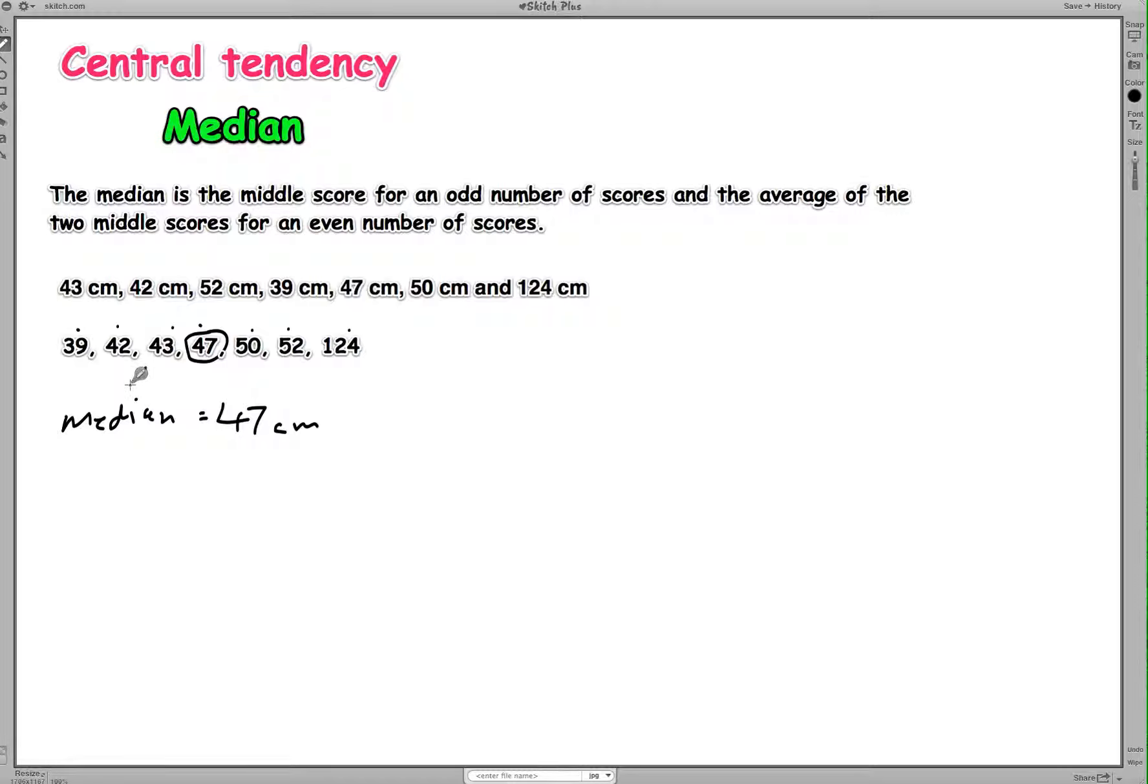So let's have a look at how to calculate the median if you don't have, if you've got an even number of scores because that's a little bit tricky because then you don't have a middle score. So let's just say in the second case here, we'll use a different color pen. Let's say we got 42, 43, 47, 50, 52, 124. Okay. All I've done is gotten rid of this 39 score here. So here we've got an even number of scores.